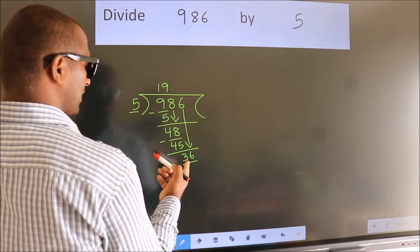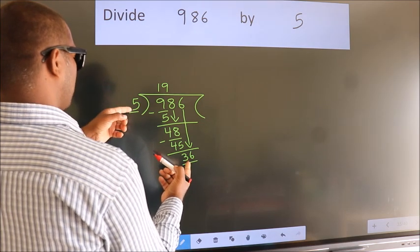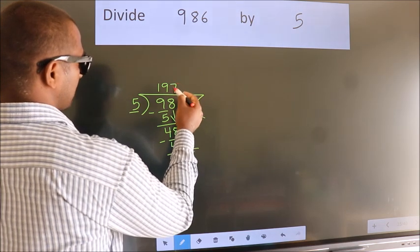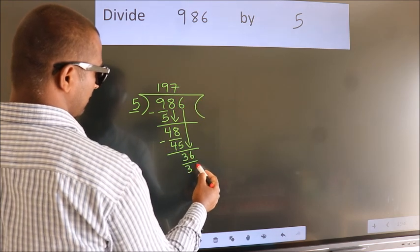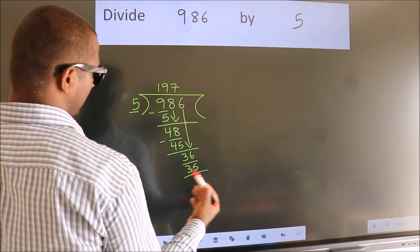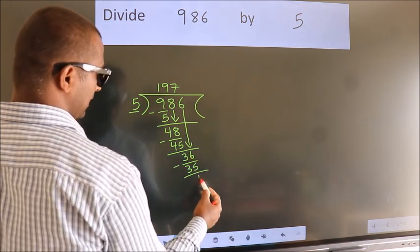A number close to 36 in the 5 table is 5 sevens, which is 35. Now we subtract. We get 1.